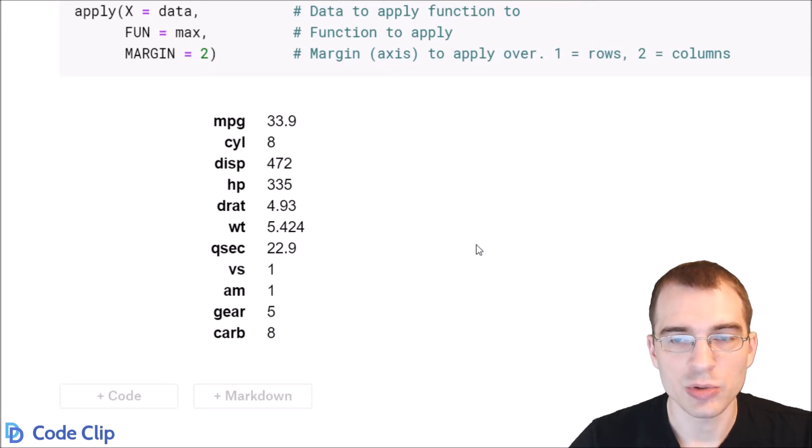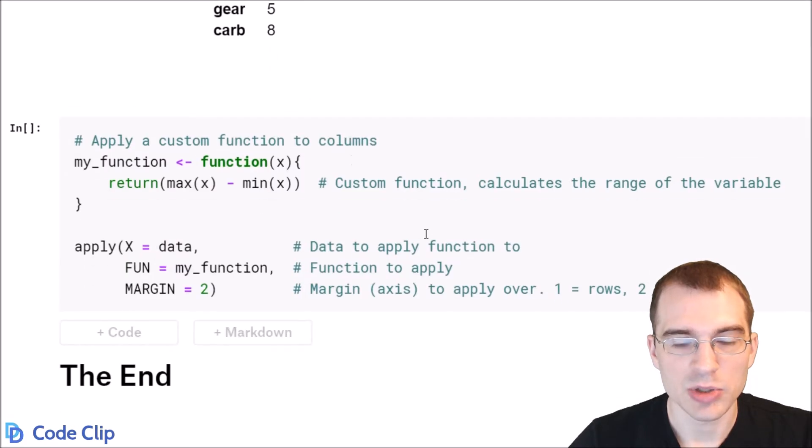Now if you want to run a custom function instead of a built-in function like max, you just need to define the function you want to run first. So here I'm defining a custom function called my_function. All it's doing is calculating the range of the data, so the max value minus the min value.